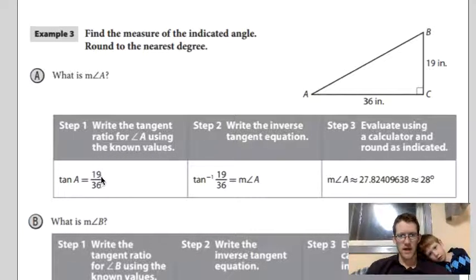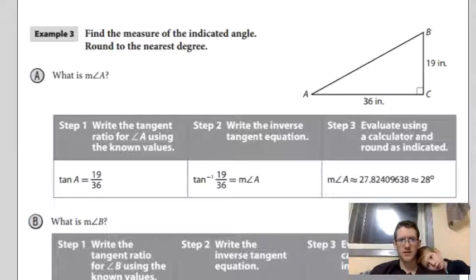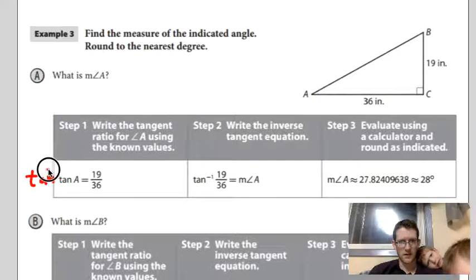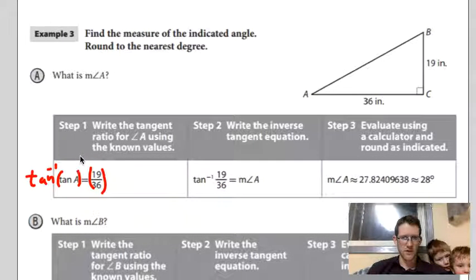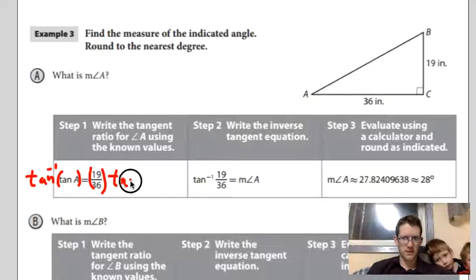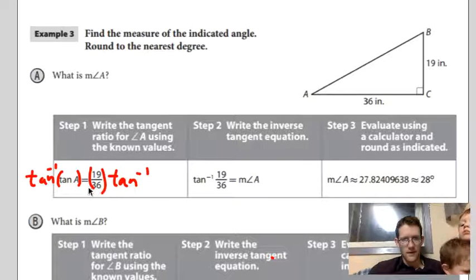So the tangent of angle A is equal to the opposite over the adjacent. In this case, instead of getting the tangent of angle A, we don't know what the tangent of angle A is. We're going to take the inverse tangent of both sides. And the book doesn't show this very well. But essentially, when you take the inverse tangent, it looks something like this. There's not really a good space to put it in here. So I'll just write parentheses, tangent. Traditionally, you put it on the left side. But we'll put it on the right side here.